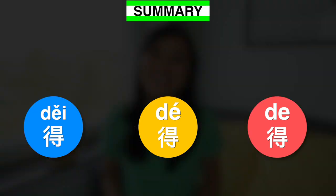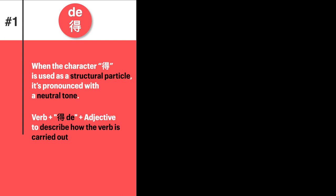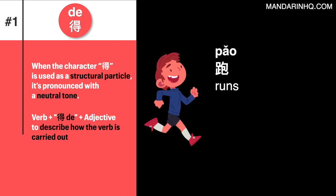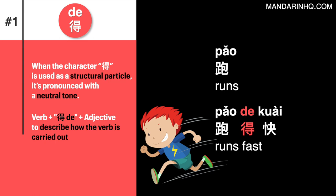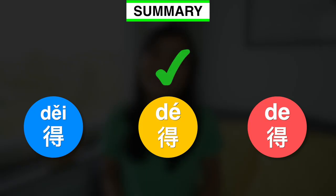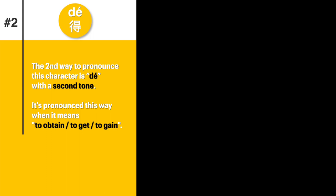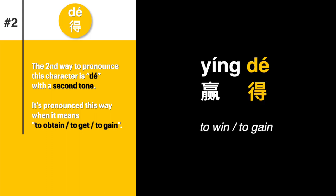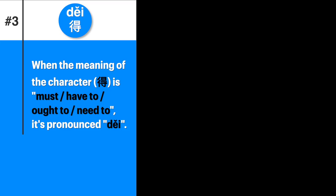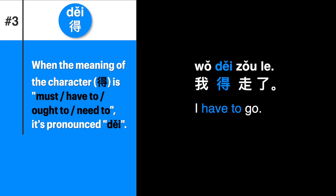That's all about 得, 得, 得 for today. To summarize: this character is pronounced 得 (neutral tone) when it's used as a structural particle — 跑得快 (runs fast); 得 (second tone) when the meaning is to obtain, to get, to gain — 赢得 (to win, to gain); and 得 (third tone) when the meaning is must, have to, ought to, need to — 我得走了 (I have to go).